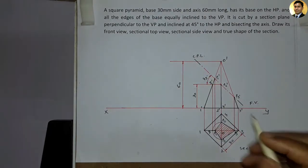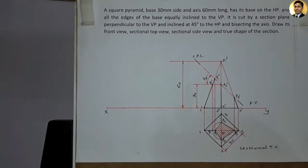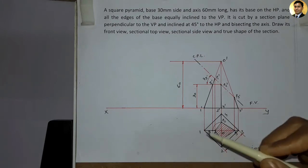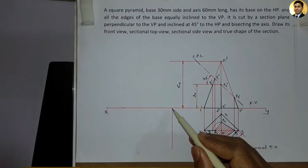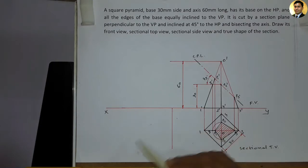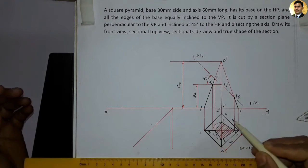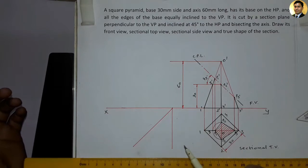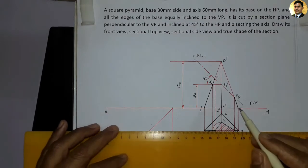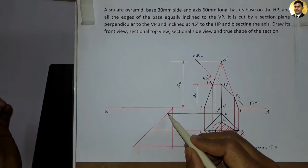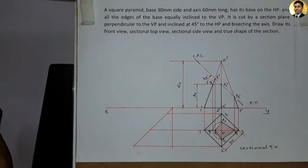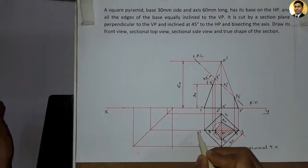Now in this condition we draw the sectional side view. We draw the X-Y line, then a vertical line, and from a random point we draw a 45-degree angle transfer line. We will project points from the front view using this 45-degree line to construct the side view.